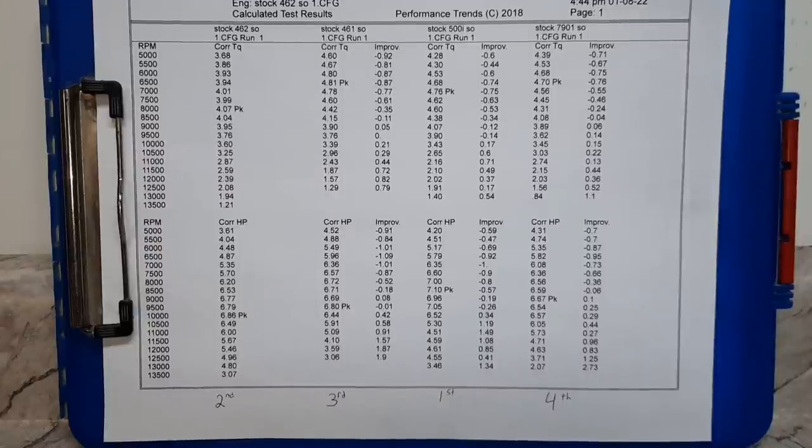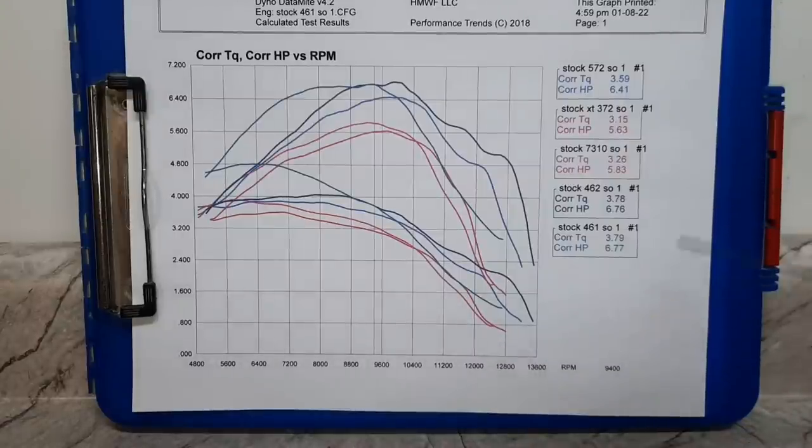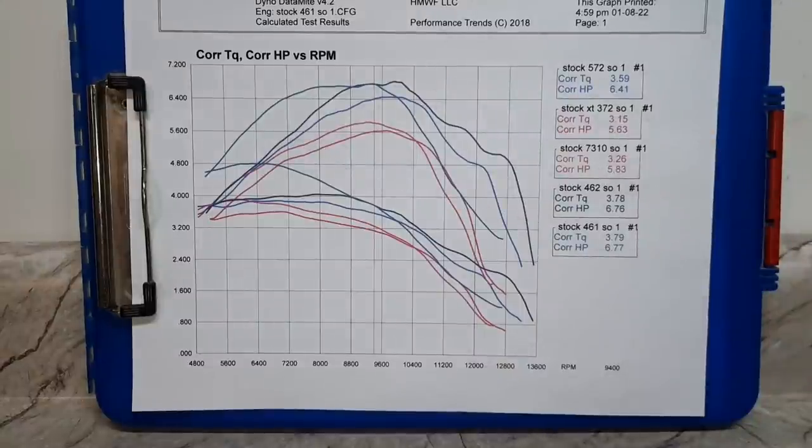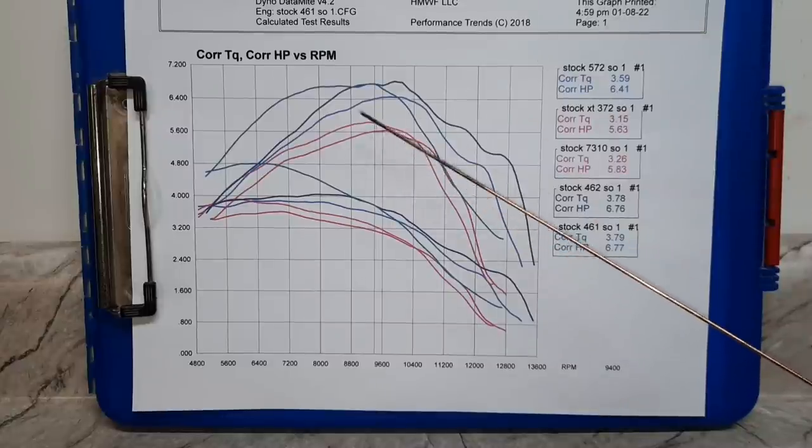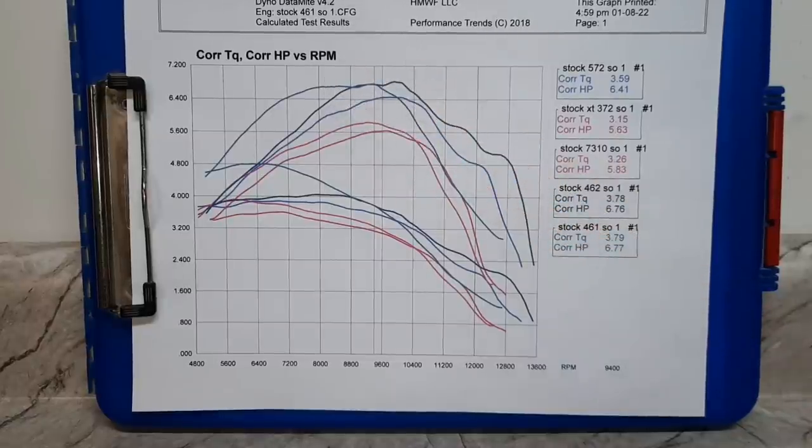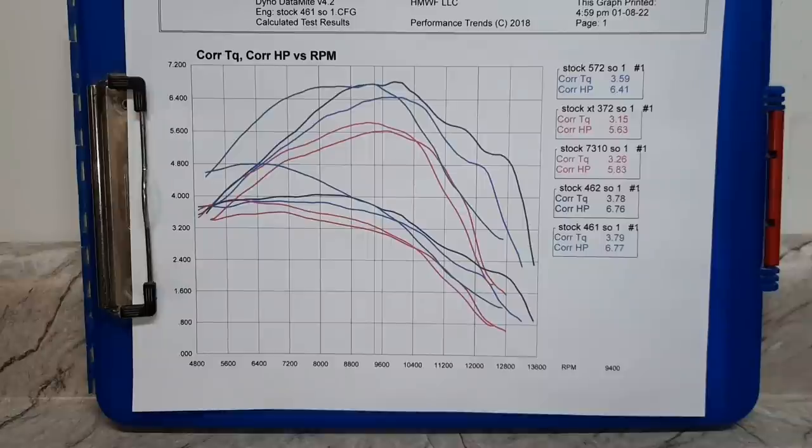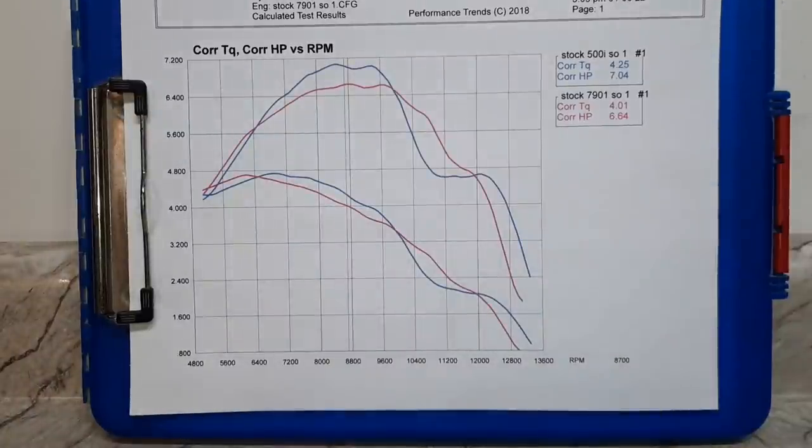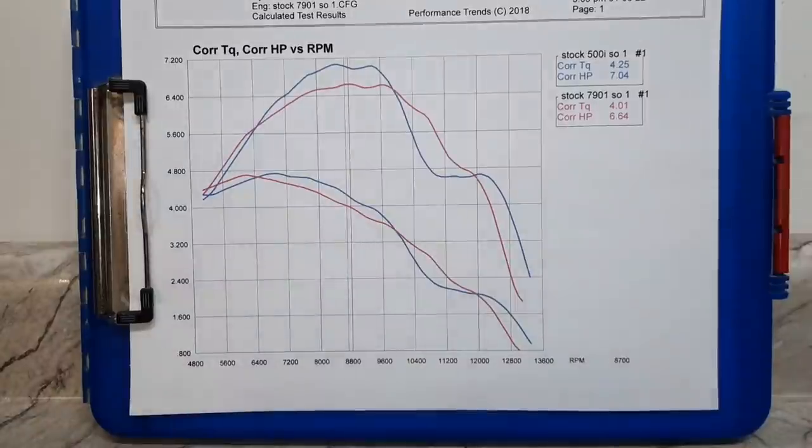Here's the smaller 70cc's. 461 is the biggest one, makes sense why it makes the most torque. But I just wanted to split these up because this is how most people will make their purchase: 372 X-torque, 7310, 572, 462, 461. Just want to show everybody these on their own graph. Now what I'm going to do, since the 500i and the 7901, those are the high end of the class, I got the printouts separating them.